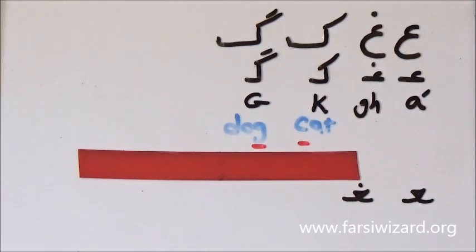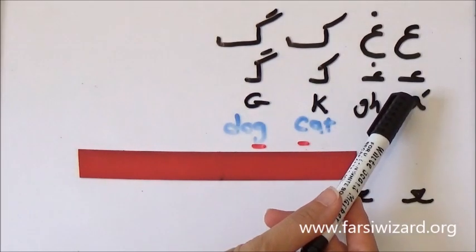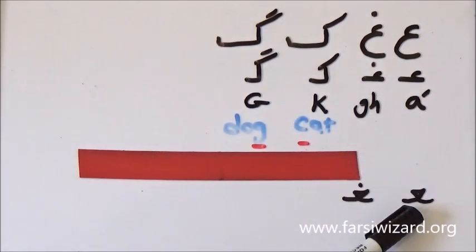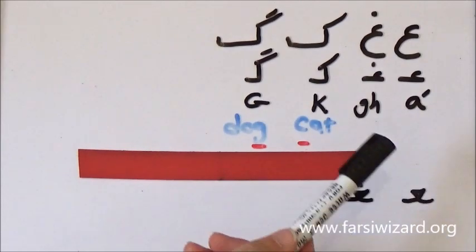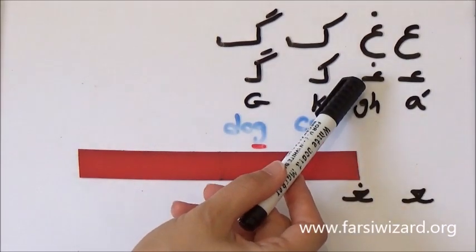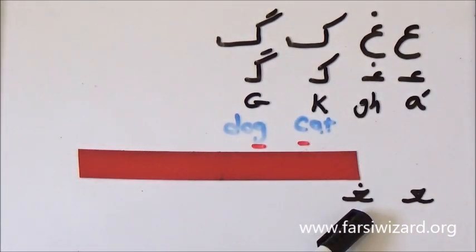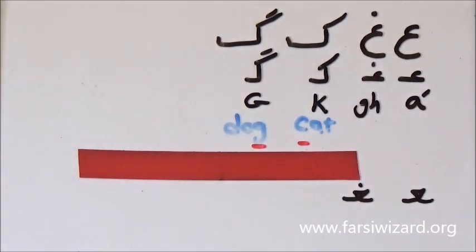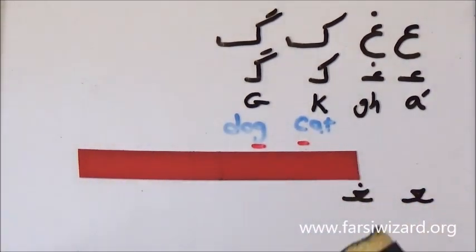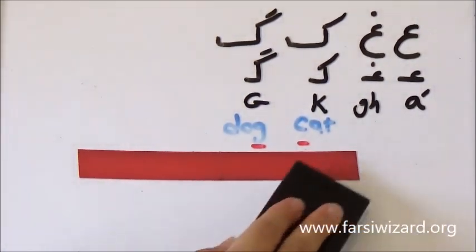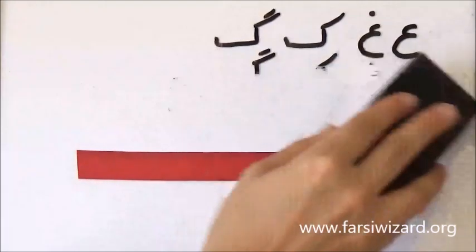For now, just know that EIN has a couple of different forms depending on where in the word it's going to appear. The same applies to REIN. Just a quick explanation: there is no such thing as the sound EIN in English, but you will get used to it the more you see examples.